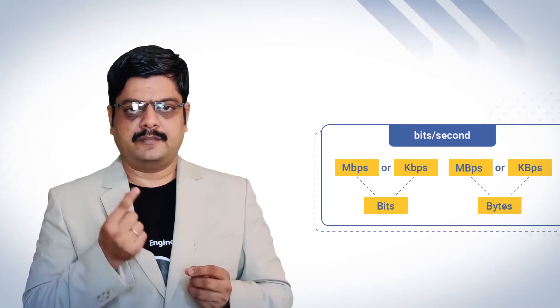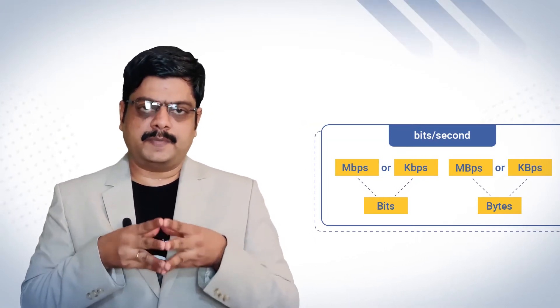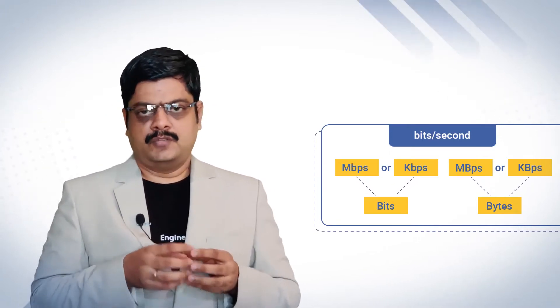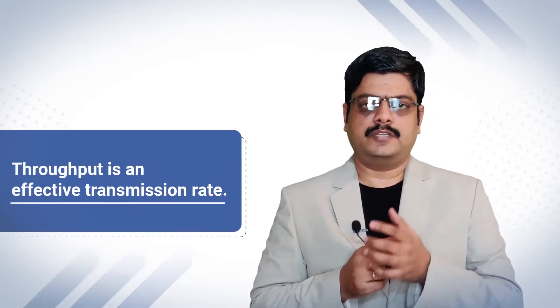Let's start with the first topic called as throughput. Throughput is the quantity of data that is being sent in a given unit of time. It means the amount of data being sent between any two devices, computers, or network elements in a given unit of time. Usually, throughput is measured in terms of bits per second — the lowercase letter 'b' refers to bits and the uppercase letter 'B' refers to bytes. We call the unit of throughput in bits per second, or kbps — kilobits per second. Throughput is an effective transmission rate between any two computers or nodes in a given unit of time.